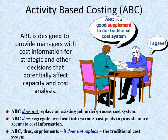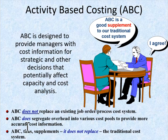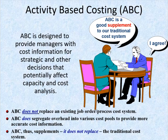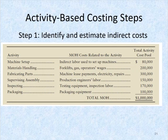ABC does not replace an existing job order or process costing system. It does help segregate overhead into various cost pools which provide more cost information. So it supplements and does not replace. Now let's look at how activity-based costing works.